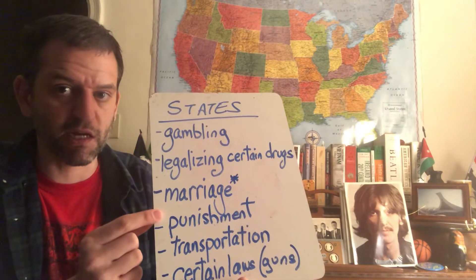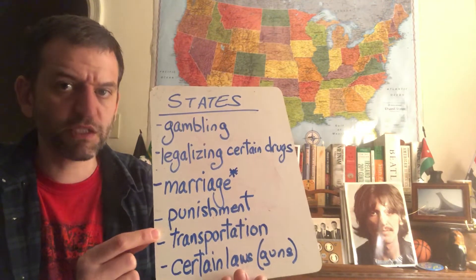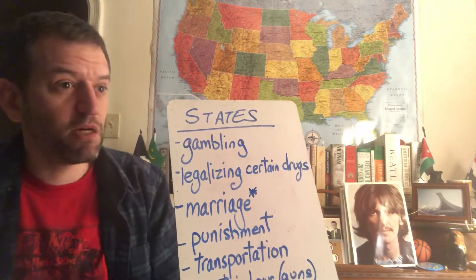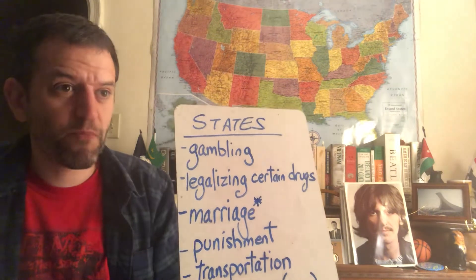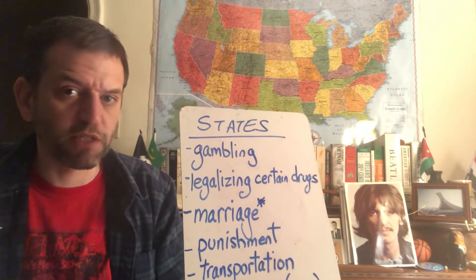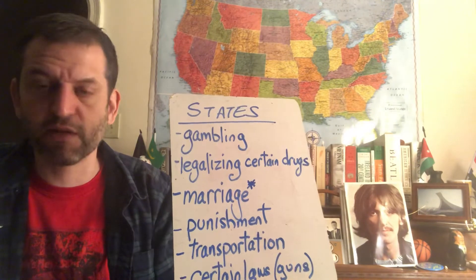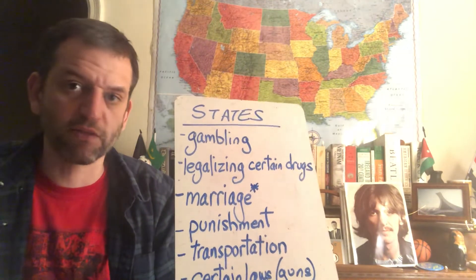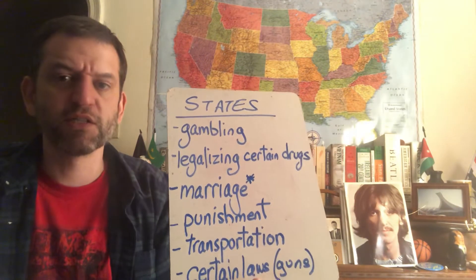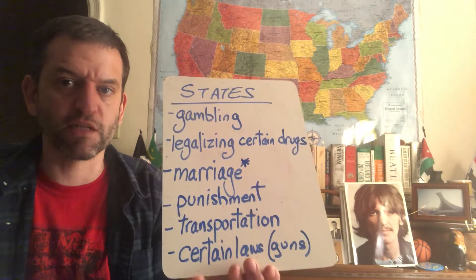Next, transportation. Each state can run its own highways a certain way, their local roads, etc. They can set their own speed limits, and that might even break down to the local level — different cities can set a speed limit. So that's another thing that is a local or state issue.